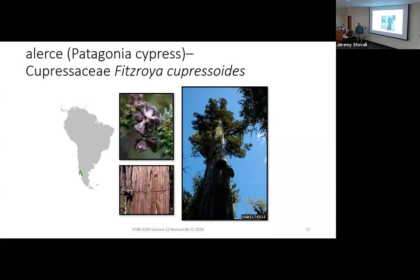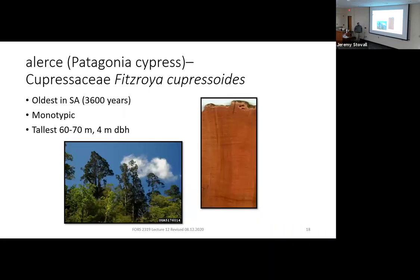Next is alerce, also called Patagonia cypress — Cupressaceae, Fitzroya cupressoides — with a central Chilean distribution. If you look at the trunk it may remind you of bald cypress, with that reddish stringy vertical bark, very small woody cones, and very short stout needles. Fitzroya is the oldest tree in South America — at least one has been aged in excess of 3,600 years old, making it the second oldest tree on the planet behind bristlecone pine in the western United States.